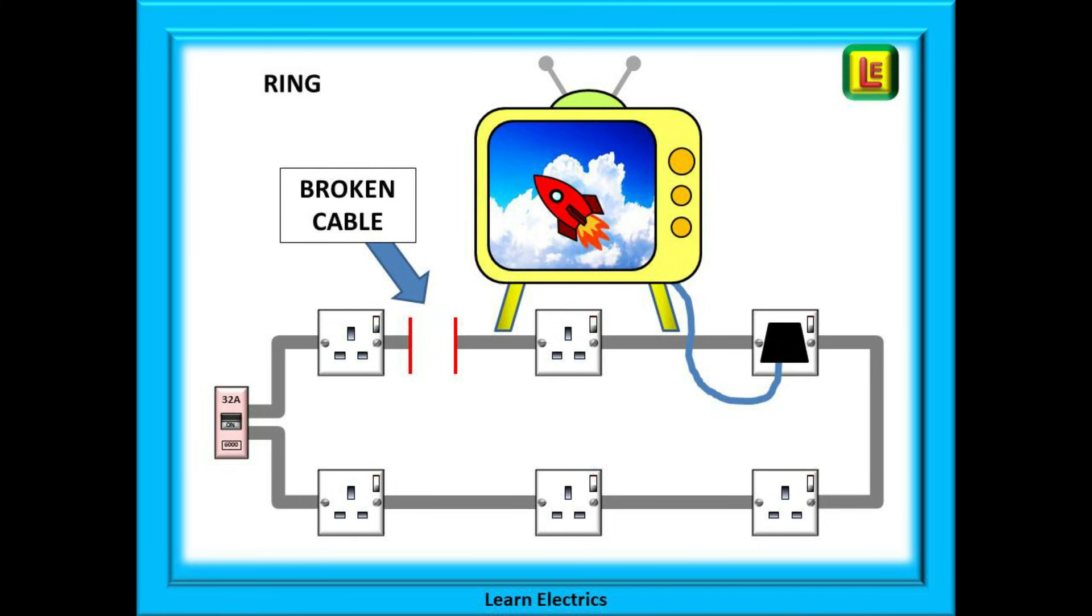At 2.5 mm, the now single cable is undersized for the 32 amp breaker. If the circuit is constantly run at or near the maximum fuse capacity, then over time that cable will begin to suffer heat stresses, possibly overheat and possibly catch fire. For this reason, the continuity of ring circuits should always be tested on periodic inspections.